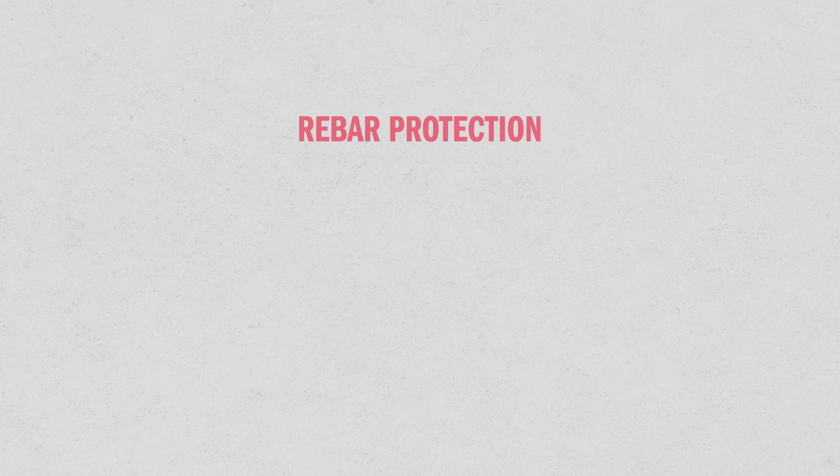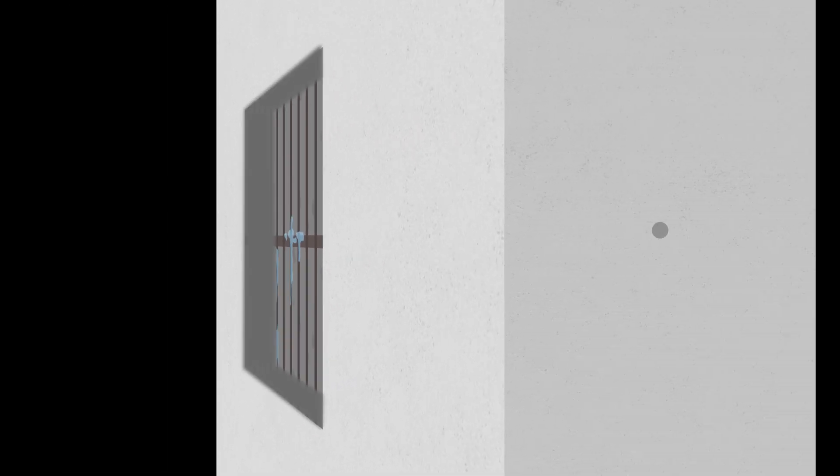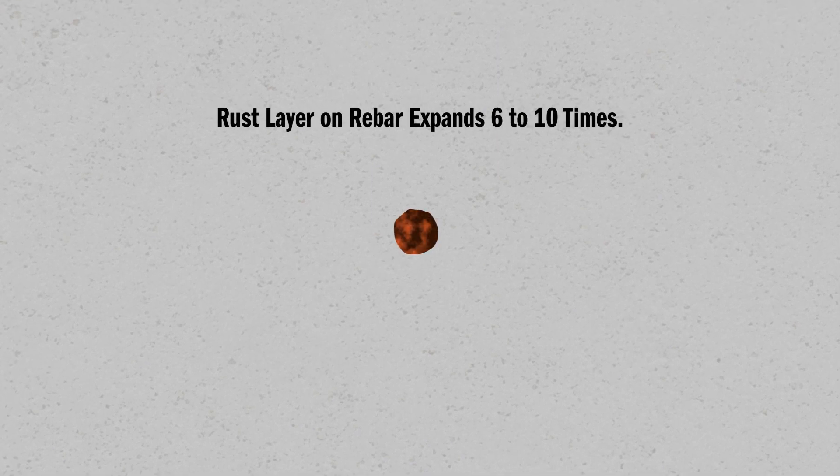Another advantage to sealing leaks with polyurethane is rebar protection. Water intrusion through concrete walls with reinforcing steel can lead to corrosion and spalling. Corroding rebar rusts and can expand six to ten times the original volume of the steel.